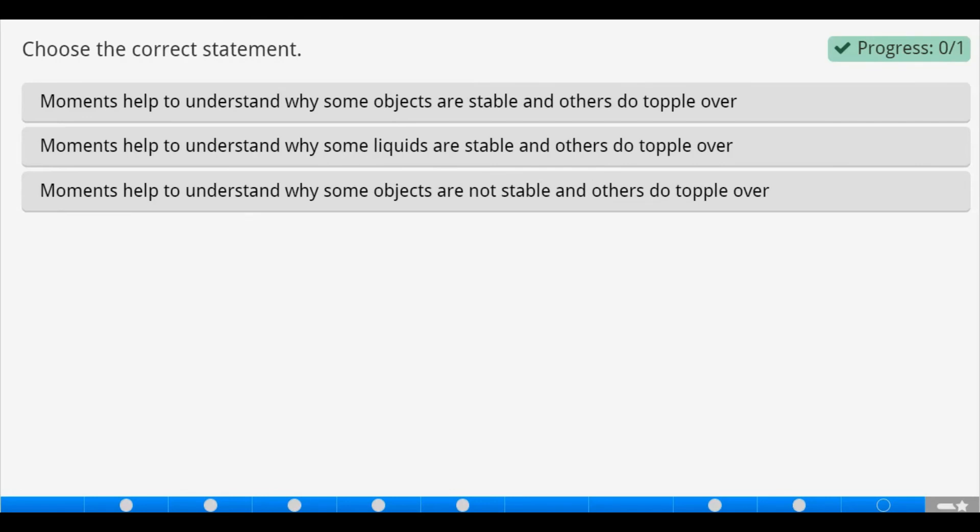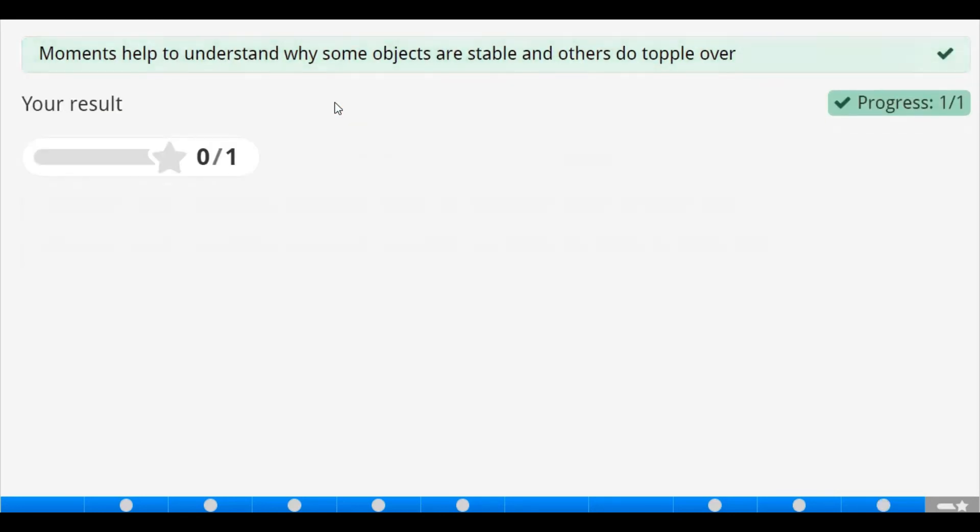Now we've come to the end of the class. But we won't go without having a summary of all what we've done today. Moments help to understand why some objects are stable and others do topple over. That statement is fully correct. But we can't leave other options out. We have to check their validity also. Moments help to understand why some liquids are stable and others do topple over. That statement is false. We are not dealing with liquids there. We are dealing with the stability of objects. Moments help to understand why some objects are not stable and others do topple over. So we see that's correct.